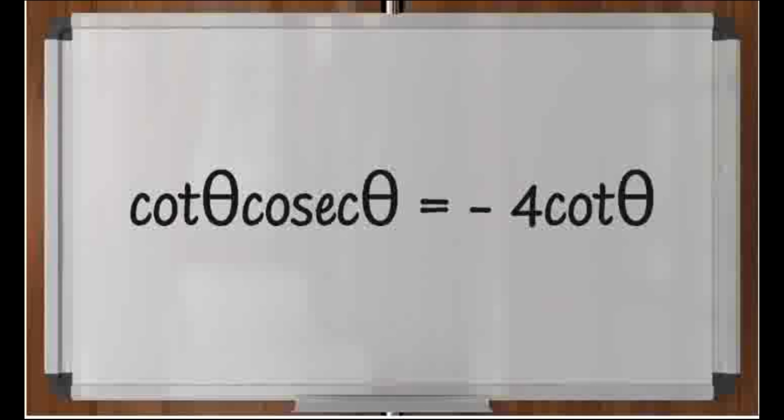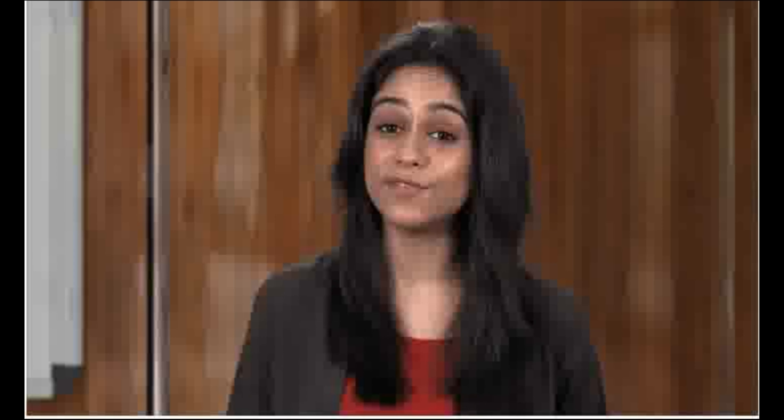A second misunderstanding around solving trigonometric equations between a range of angles is not to factorise, but cancel terms. In this expression, learners might cancel the cotangent on both sides of the equation, but that would lead to valid answers not being given.